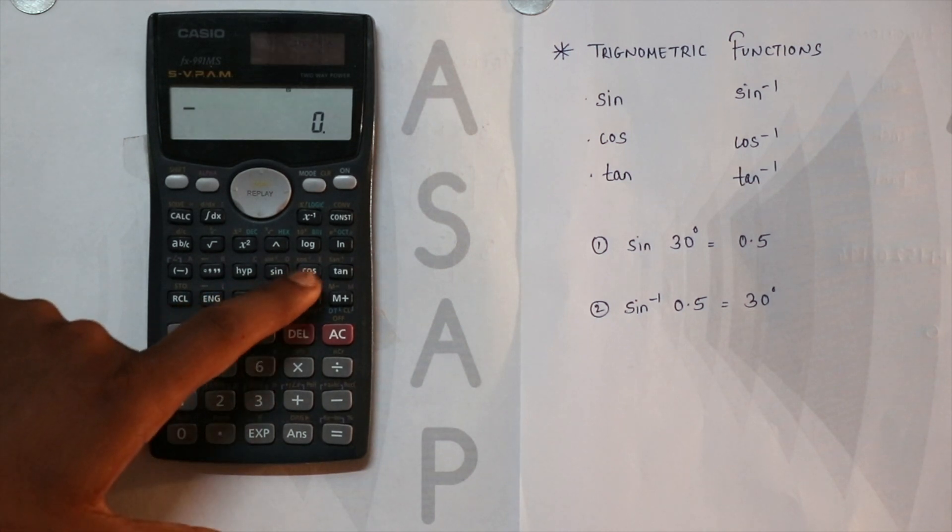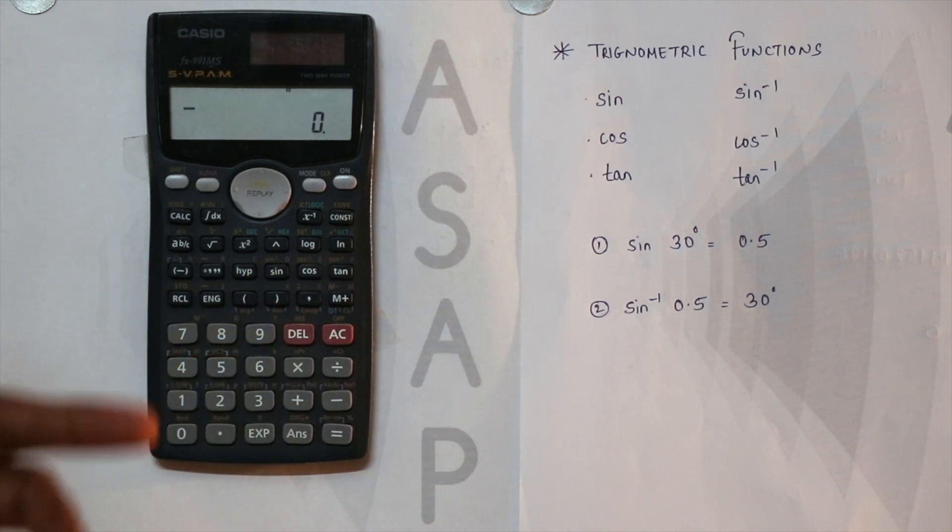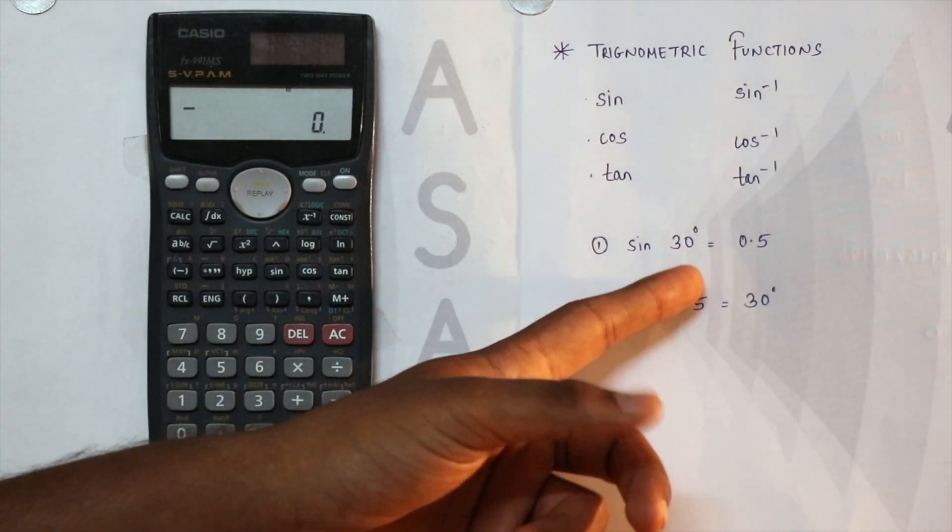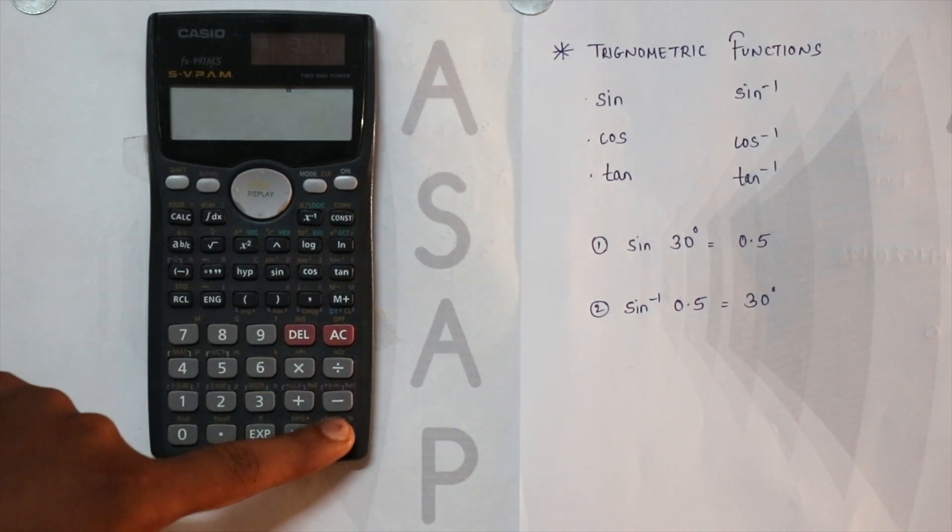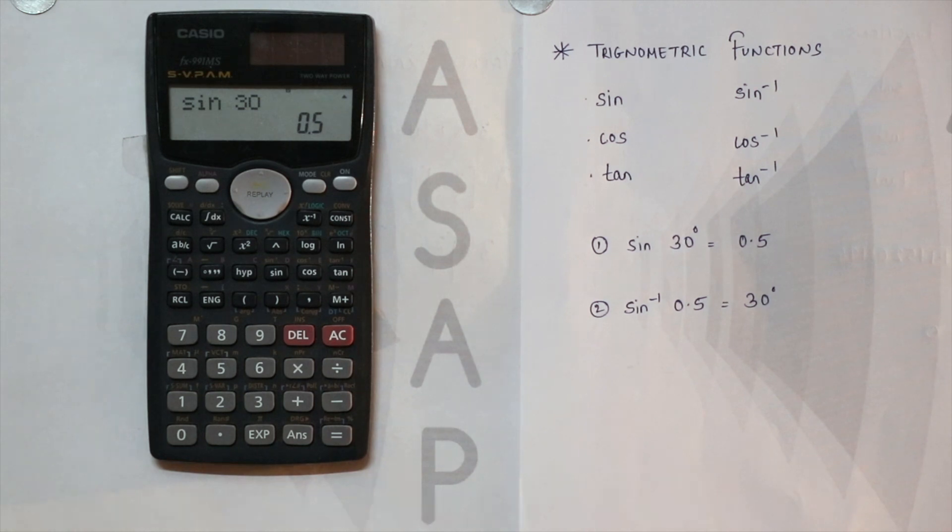We have the values here: sine, cos, and tan, and above that it is sine inverse, cos inverse, and tan inverse. We'll just see how to first solve sine 30 degrees. So sine 30, you can see the answer as 0.5.